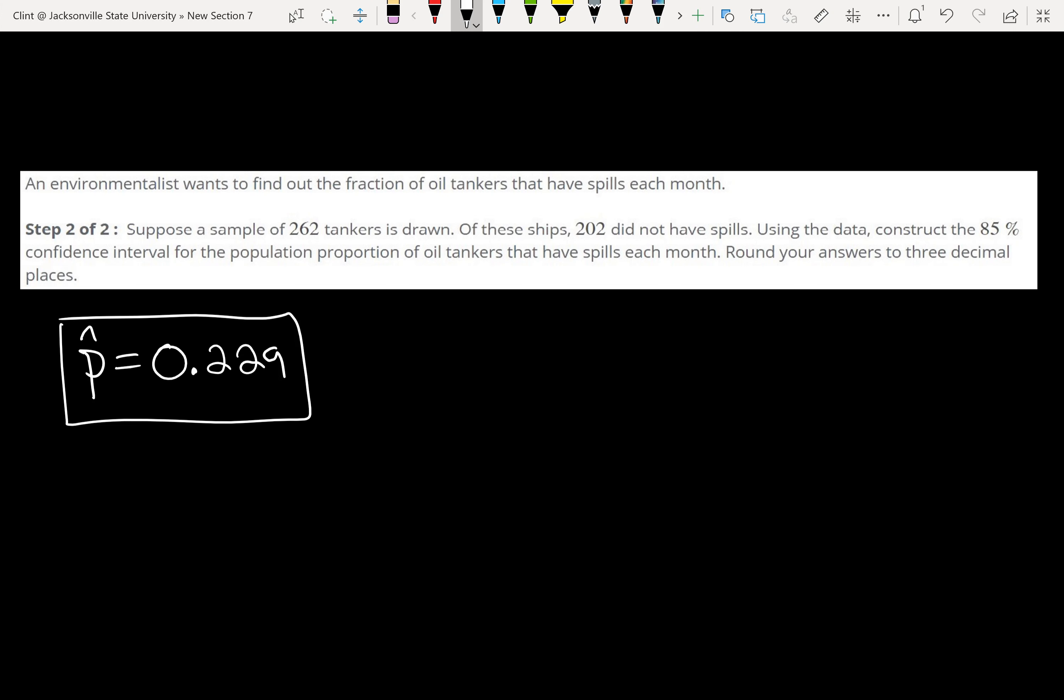The same information, 262 tankers, we had 202 that did not have spills, but this time it says using the data construct the 85% confidence interval for the population proportion of oil tankers that have spills each month, round to three decimal places. So we've got the first thing we need, we have our point estimate. Before our point estimate would be a sample mean, but here our point estimate is a sample proportion. So the other thing we need is a margin of error.